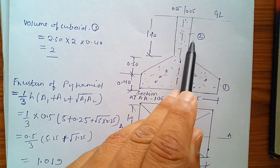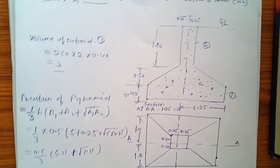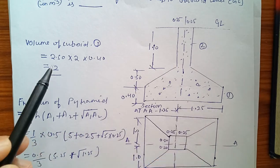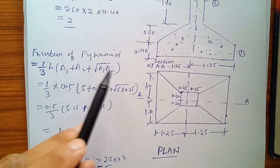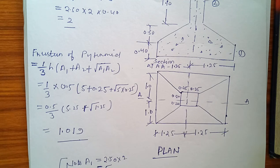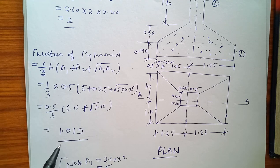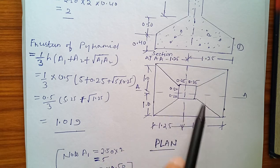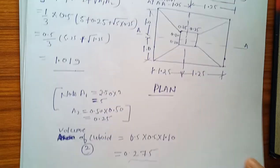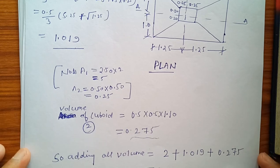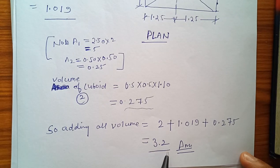So we get cuboid 1, frustum 2, and cuboid 3. Volume of cuboid 1 by simple formula L times B times H we get this. And frustum of pyramid formula is 1 over 3 times H times (A1 plus A2 plus root of A1 times A2). This is the formula we have to remember. Then putting the values we get this. This plan is also given, so all values we take from here and from here. Volume of cuboid 2 again from formula. So adding all volumes we get the volume of concrete.